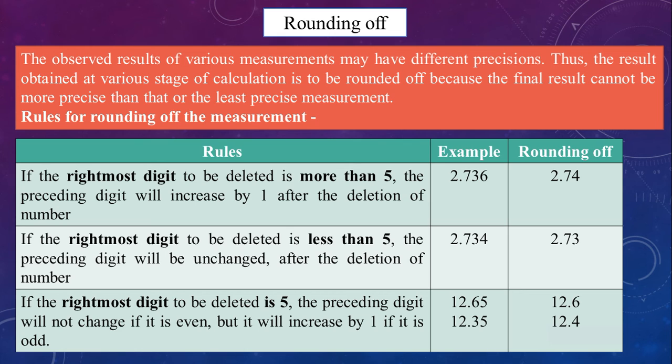Now comes a dilemma. When we have the number to be deleted as 5 itself, not more than 5, not less than 5, it is 5 itself. Then the rule is slightly different. We have to see the previous digit before 5. If it is an even number, we keep the digit as it is. If it is an odd number, we have to increase it by 1. So, 12.65 is rounded off to 12.6. If 12.35, it is rounded off to 12.4.